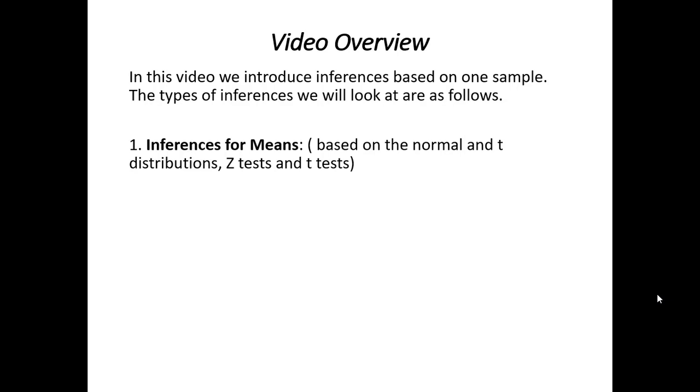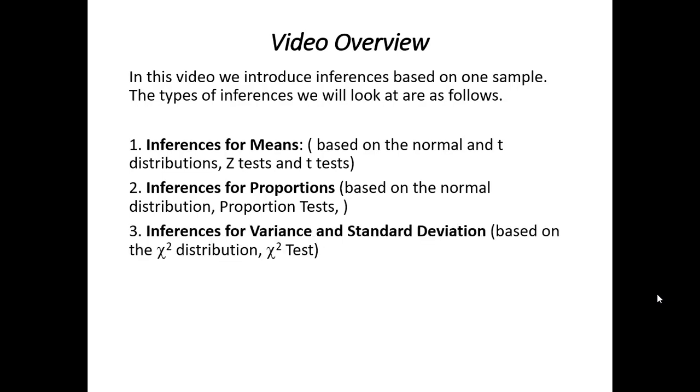One type are inferences for means. These are based on the normal distribution and the t-distribution. In terms of tests, we'll call these z-tests and t-tests. We'll also look at inferences for proportions. Again, these are also based on the normal distribution. And we're going to take a look at proportion tests. And the last type will be inferences for variances and standard deviations. These are based on the chi-square distribution and the hypothesis test would be a chi-square test.